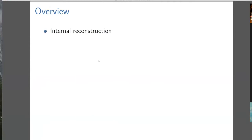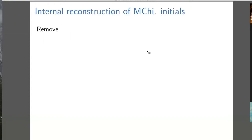First, internally reconstruct Middle Chinese, and then look at Xiexiong evidence. We can't look at rhyme evidence in this case, because when you rhyme things, you're using the vowel and the coda of a syllable, not the initial. The poetic device useful for studying initials would be alliteration, but Chinese hasn't used alliteration in a systematic way like Old English did. So it's only really internal reconstruction and Xiexiong evidence that helps us reconstruct the initials.